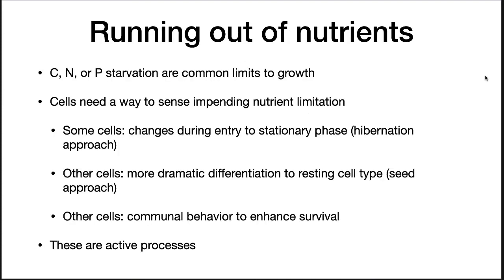If nutrients do begin to run out, then a microbe will alter its metabolism as it enters stationary phase. Cells most often starve for carbon, nitrogen, or phosphorus. Cells need a way to sense impending nutrient limitation and then turn on certain pathways. Some microorganisms will change as they enter into stationary phase — what I will call the hibernation approach. Others have a more dramatic differentiation to a resting cell type — the seed approach. Finally, still others will begin communal behavior to enhance survival. These are all active processes.